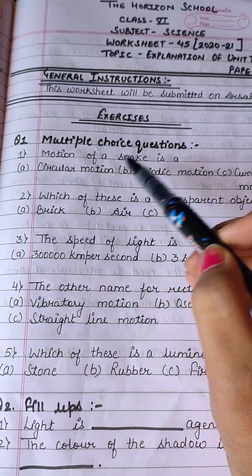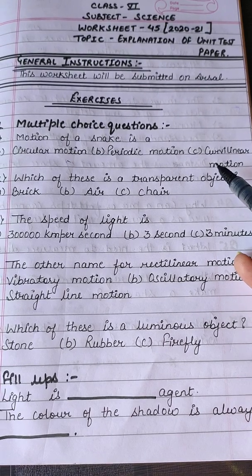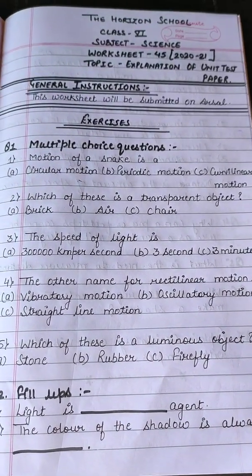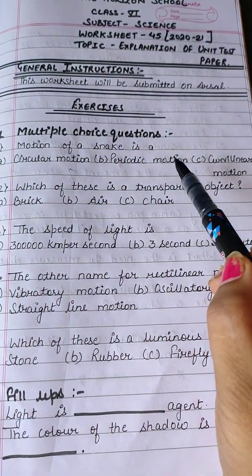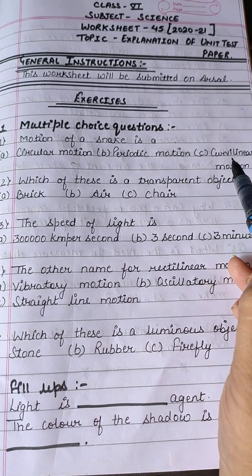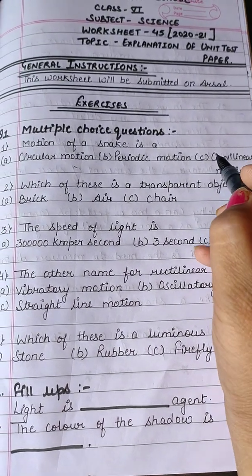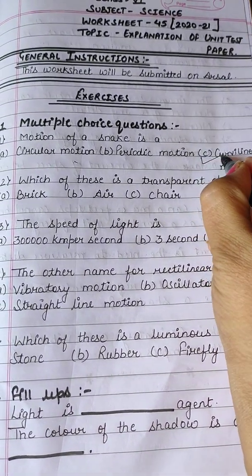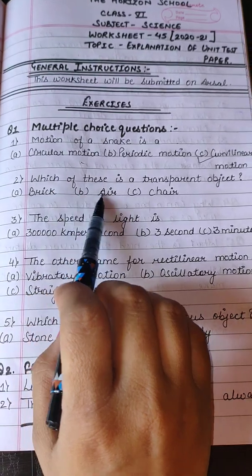The first question is: motion of a snake is — circular motion, periodic motion, or curvilinear motion? The motion of a snake is always curvilinear motion, so the answer is curvilinear motion.